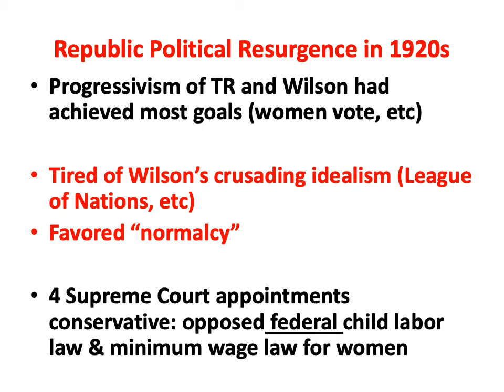As we saw in the previous lectures, the 1920s politically in the United States were characterized by a real resurgence of the Republican Party. One of the reasons for that is that the liberal progressivism of Theodore Roosevelt and Woodrow Wilson had actually achieved most of the major goals, such as the vote for women, direct election of U.S. senators, etc.